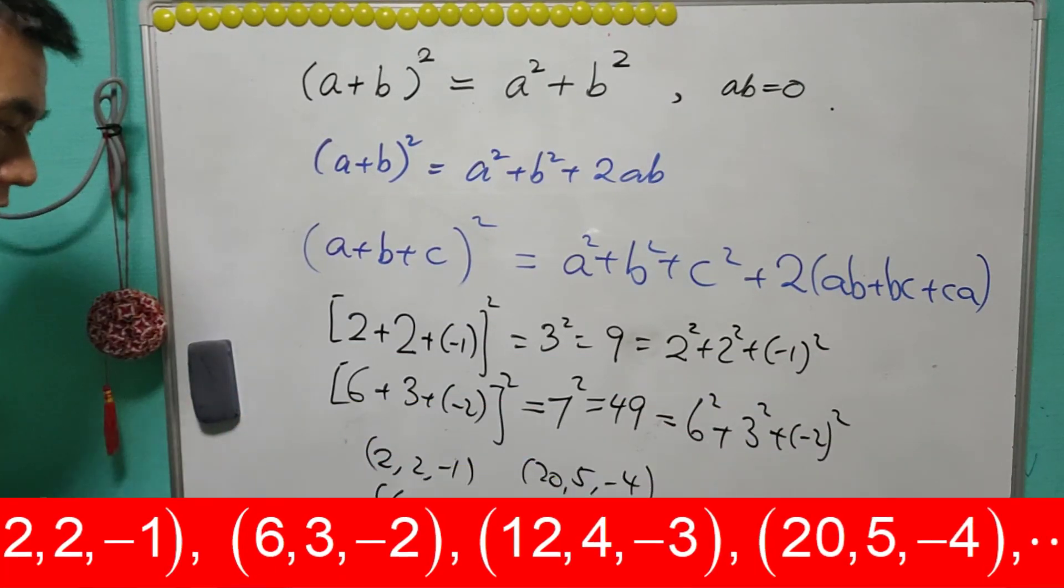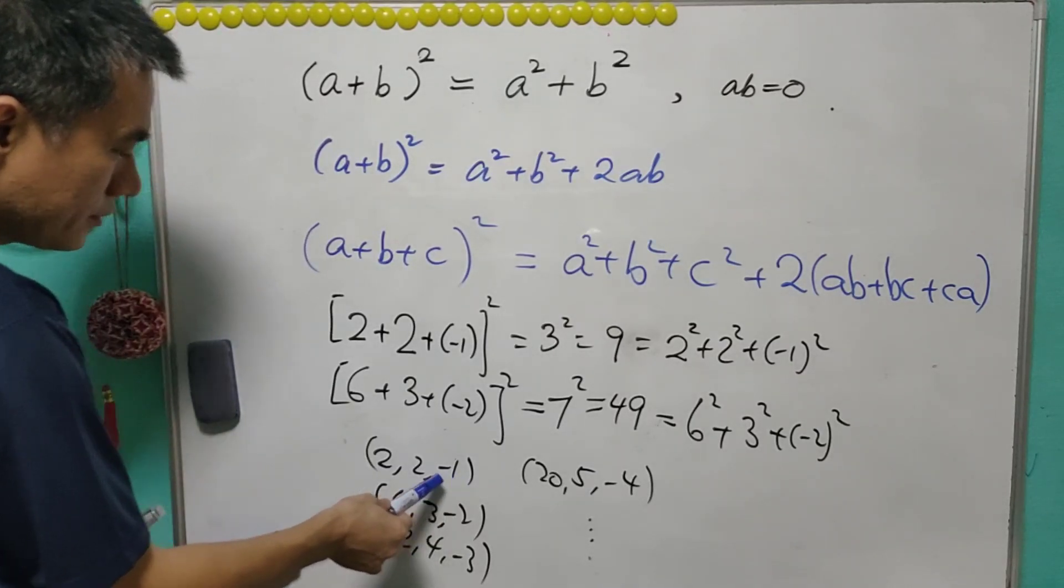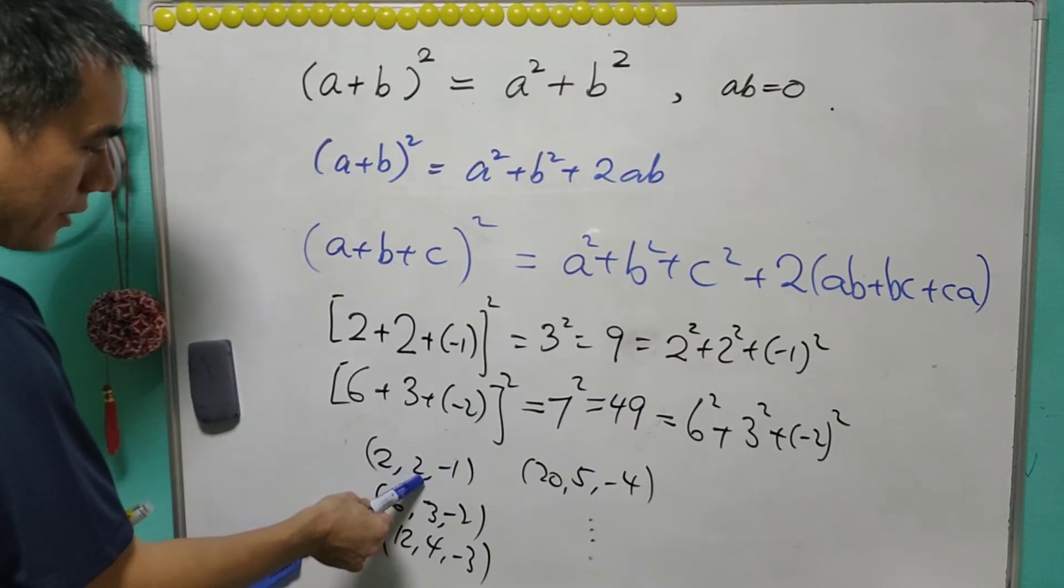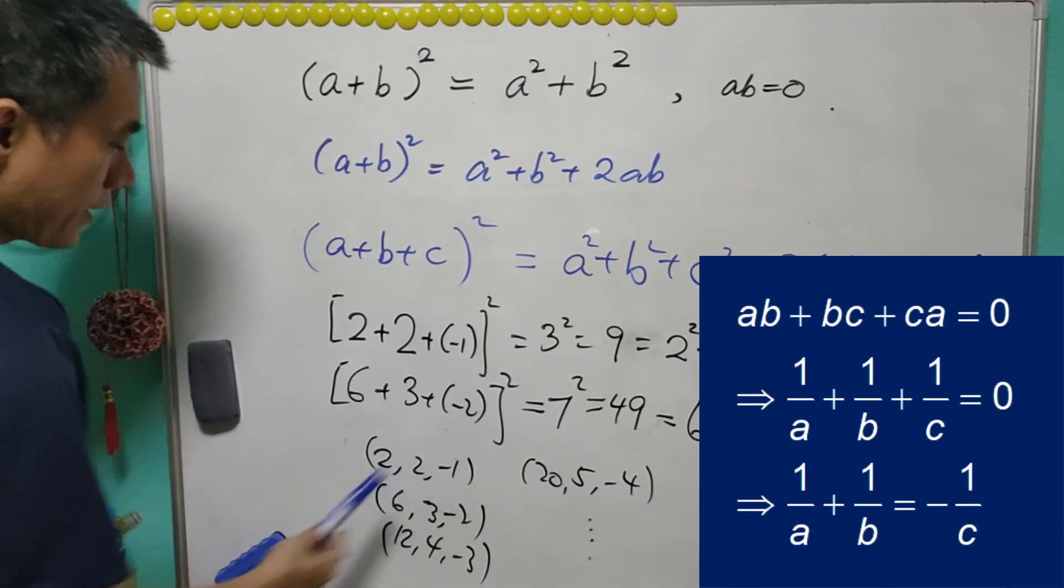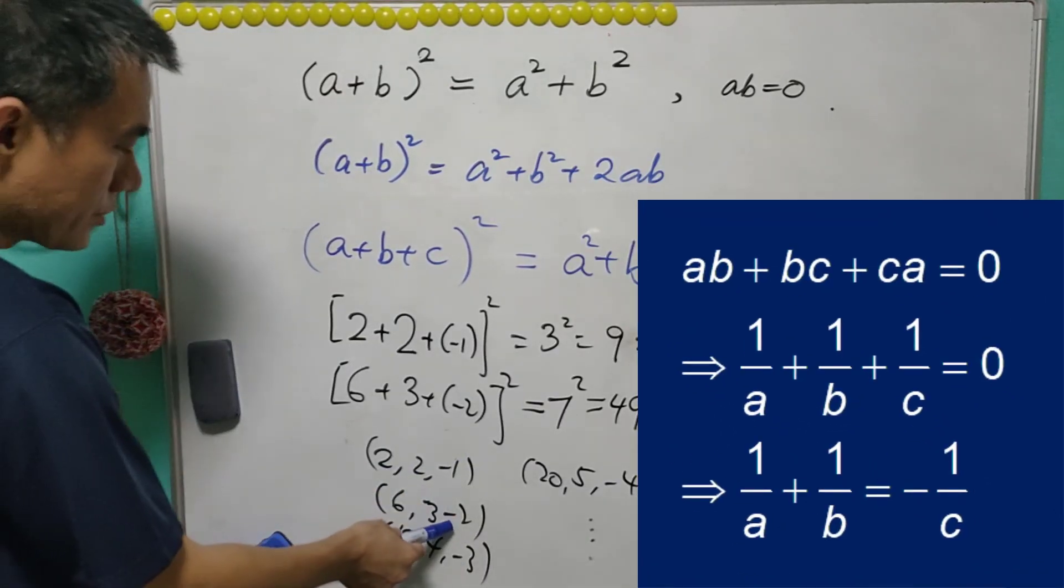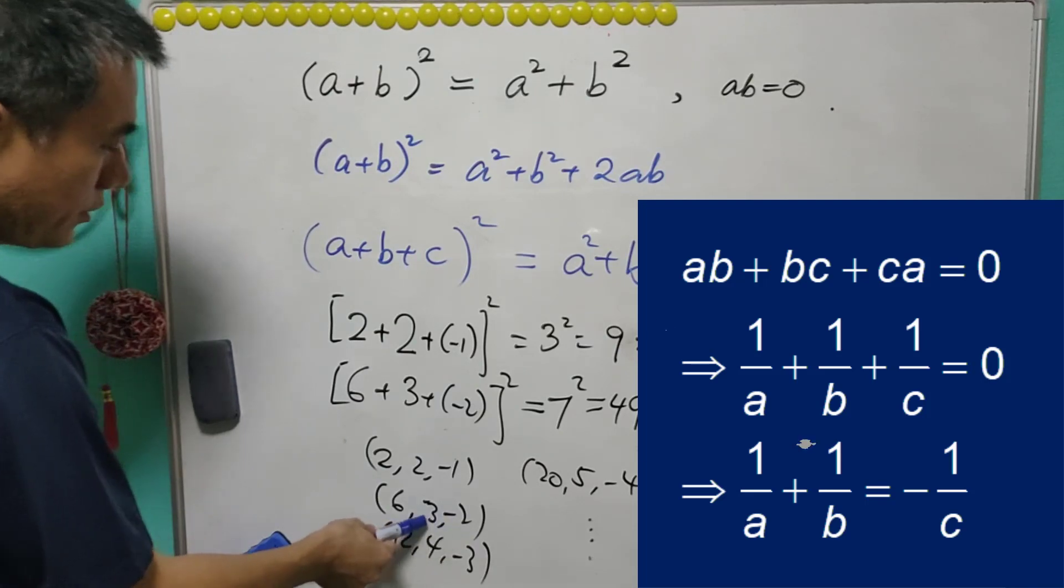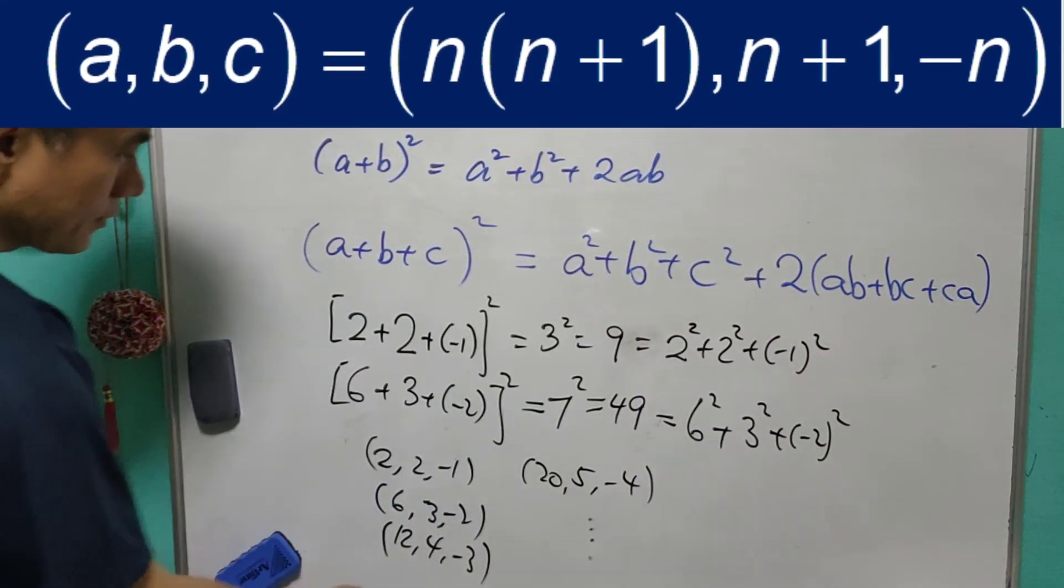I believe for some of you, you will already see what is happening. If we start with negative 1, the integer after 1 is 2. So negative 1, 2, and the product of 1 and 2 is 2. This is how we get the a, b, and c. We start with negative 2. The integer after 2 is 3. Then the product of 2 and 3 is equal to 6. And the pattern follows.